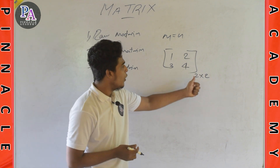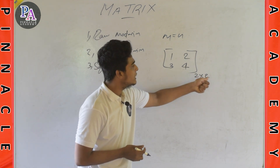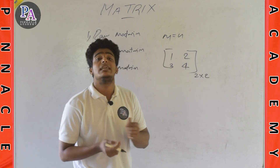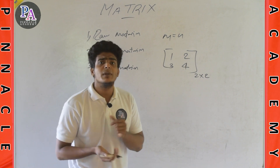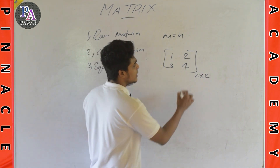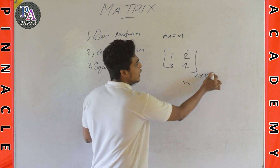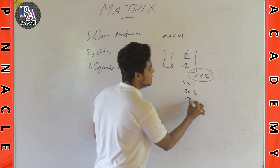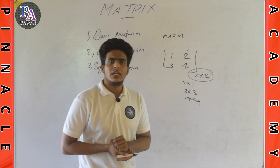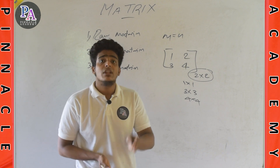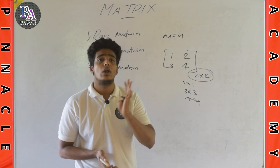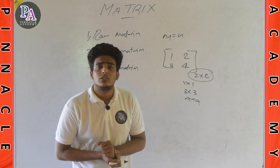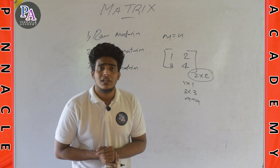We consider any matrix where the number of rows and number of columns are equal. For example, 1 by 1 is a square matrix, 2 by 2 is a square matrix, 3 by 3 is a square matrix, 4 by 4 is a square matrix. So in a square matrix, the number of rows equals the number of columns.